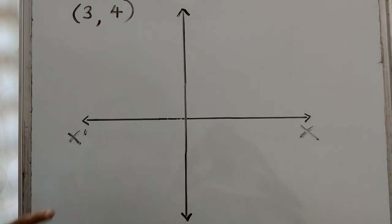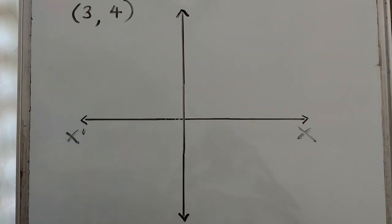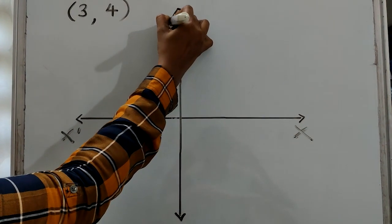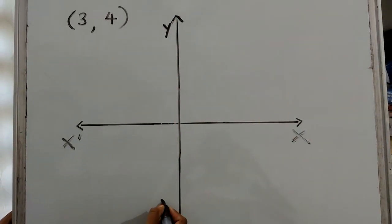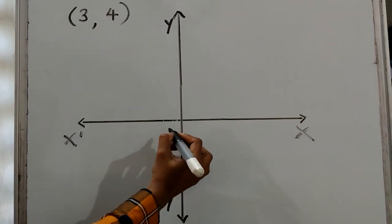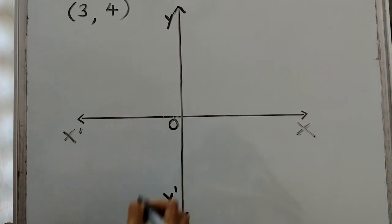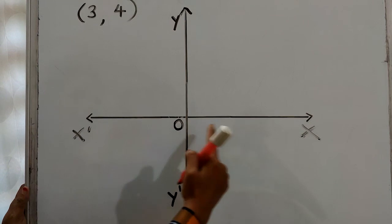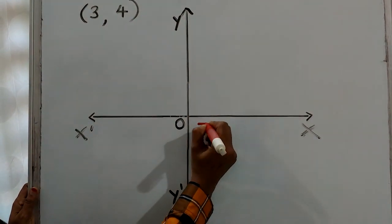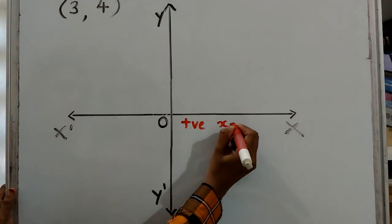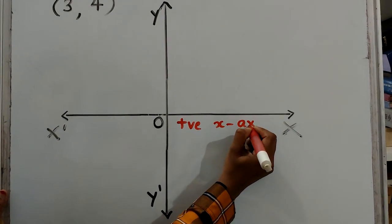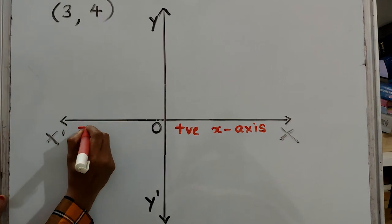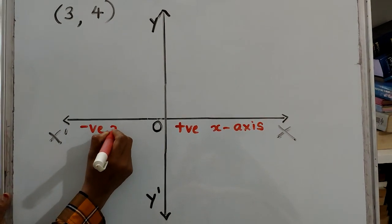The vertical line is called the y-axis — Y to Y' is the y-axis. The meeting point O is the origin. OX is the positive x-axis, and OX' is the negative x-axis.